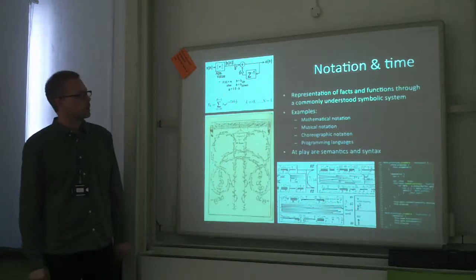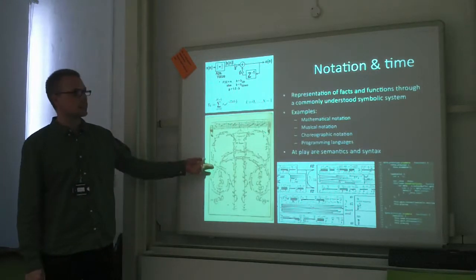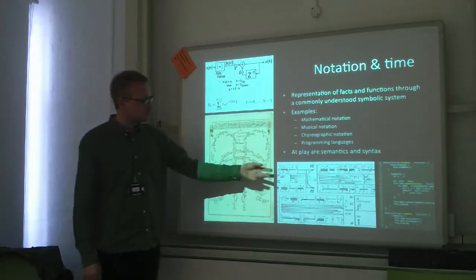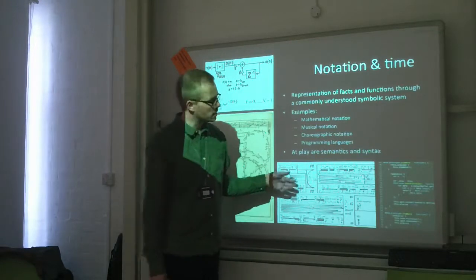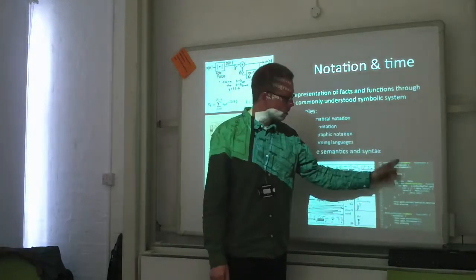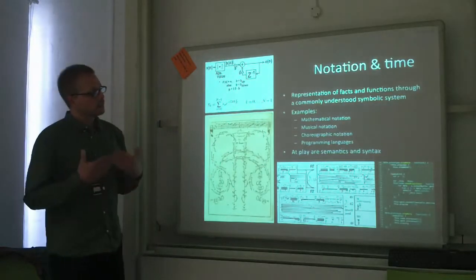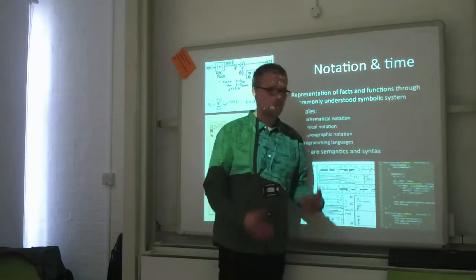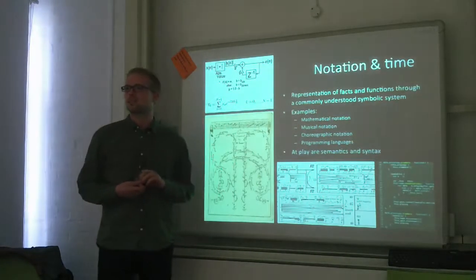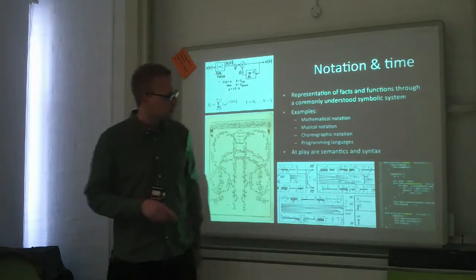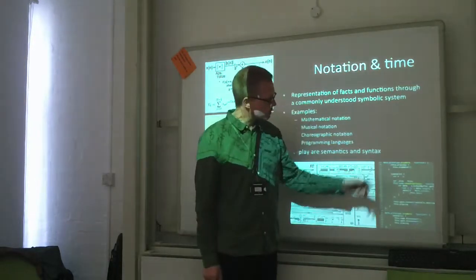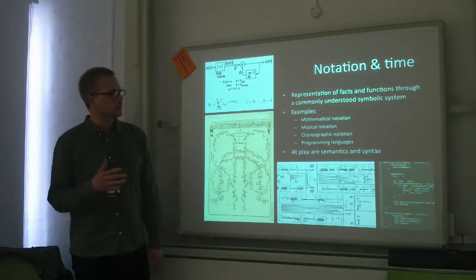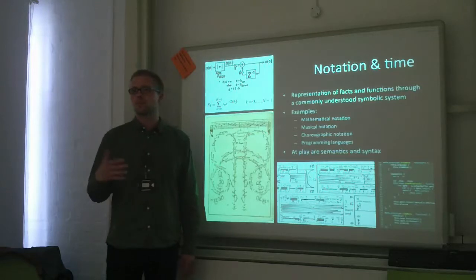This is a choreographic notation, musical notation, non-traditional notation. And here we have a code notation where there are a lot of elements that help the human to understand the code. For example, indentation, syntax coloring, capitalization, and all kinds of things that help to communicate what is being expressed, not just for the machine, but also for humans.